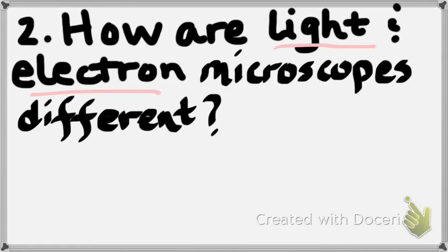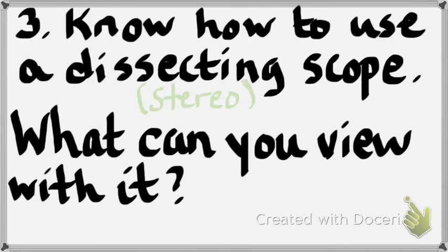Number three: using the stereoscope, also known as a dissecting scope. You focus with the black knob, change the magnification with the white knob, and change the light with the buttons at the bottom. It's a pretty simple scope — like a fancy magnifying glass. If you want to see the surface of something in more detail, the stereo scope is your scope.